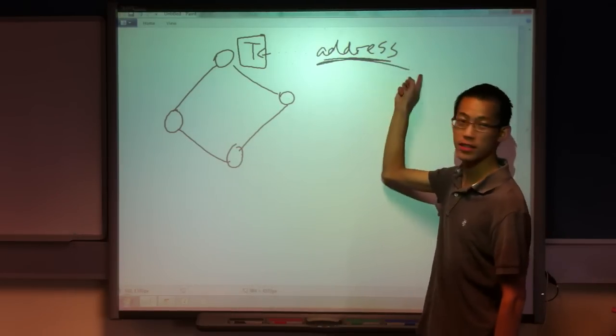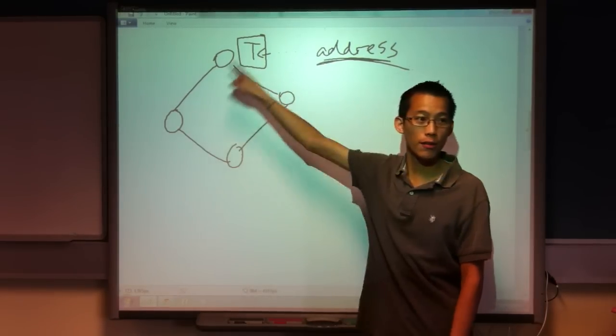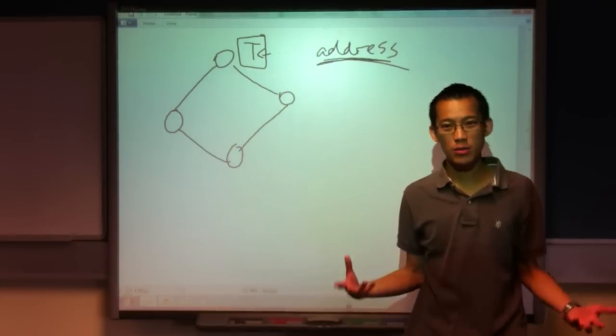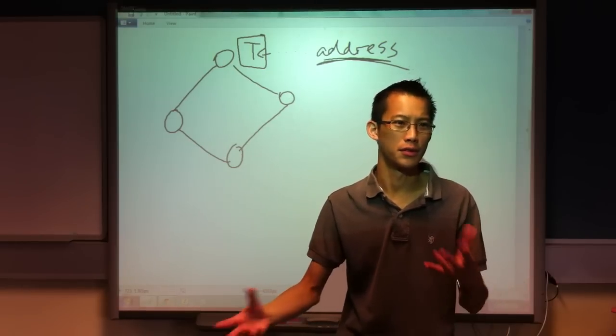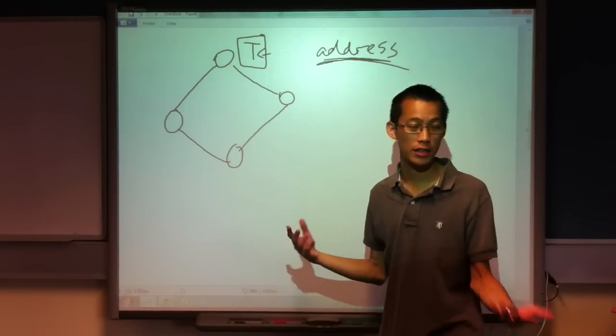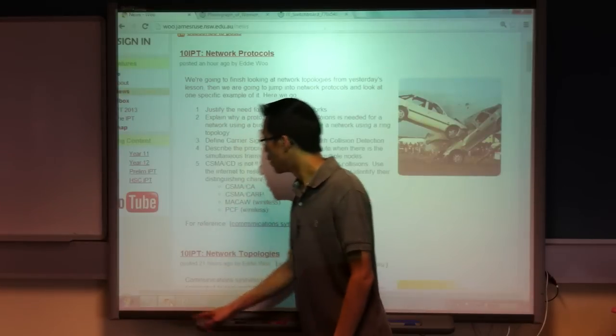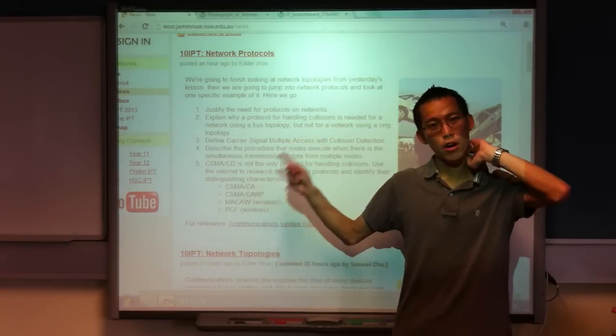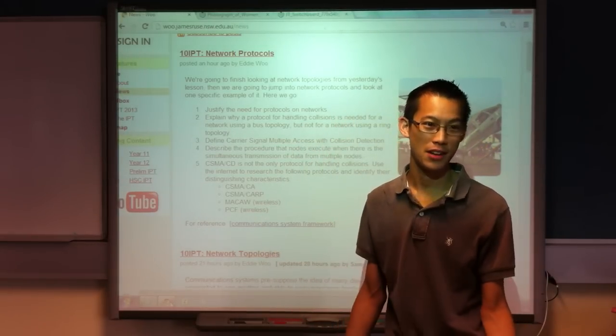So that protocol there, which governs the kind of address that it's got, that needs to be agreed upon by all of the nodes. Because otherwise, what if two people think they have the same address? Because they haven't decided on the protocol for determining addresses. Then two sets of people are going to be opening the same set of data, and you're going to get really confused. You need a protocol on a network to make the network actually achieve its purpose. That's the key thing.